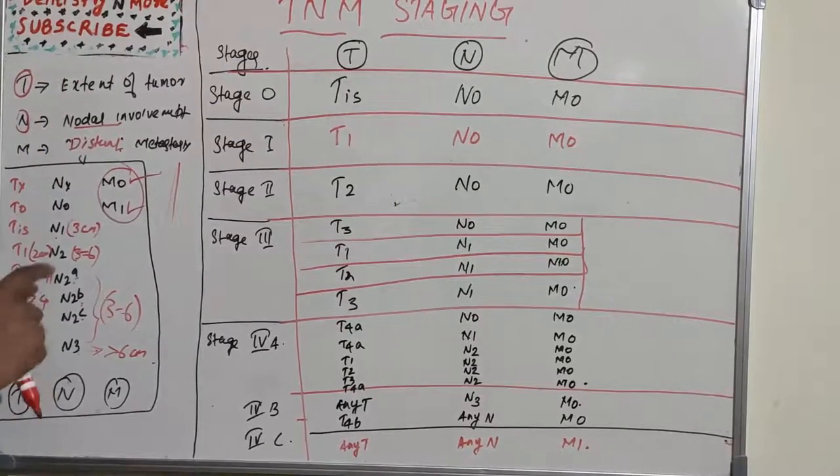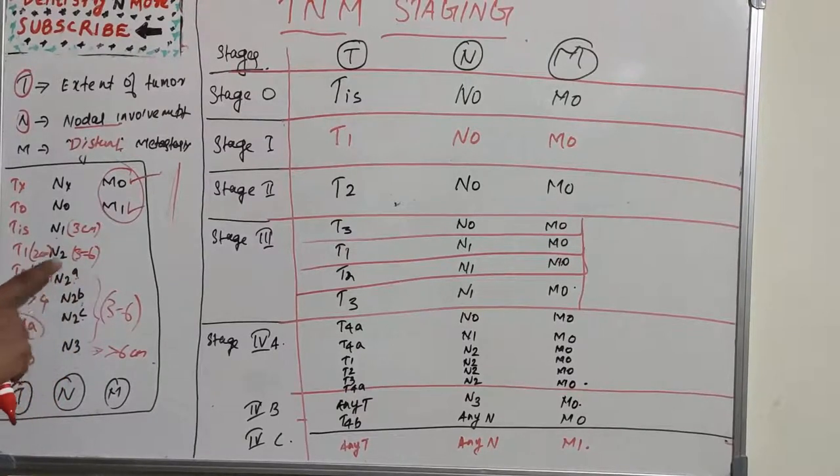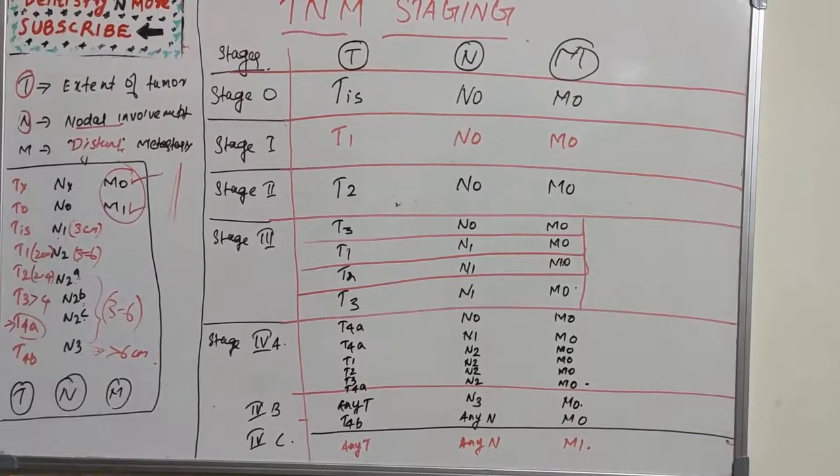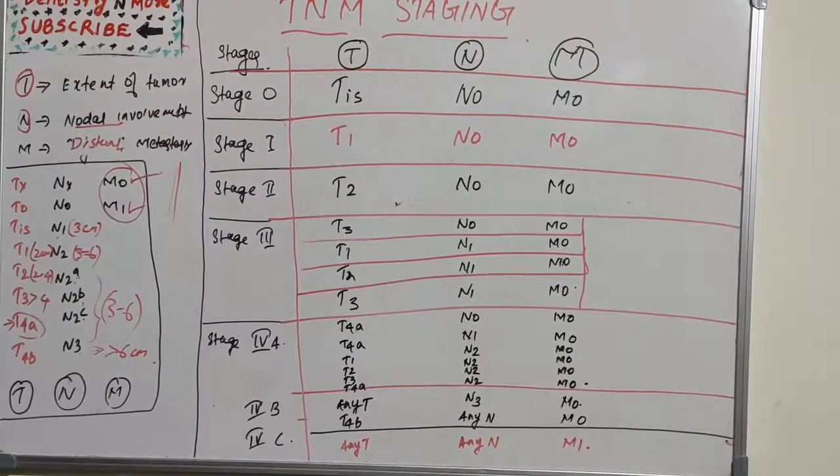Nodal involvement: N1 is 3 centimeters, N2 is 3 to 6 centimeters with three categories—ipsilateral single, ipsilateral multiple, and bilateral—whereas N3 is more than 6 centimeters. M0 and M1 represent absent or present distant metastasis.